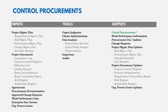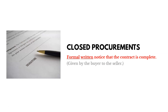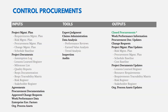The key output of Control Procurements is closed procurements — formal written notice from the buyer to the seller that the contract has been completed. Other outputs can include work performance information, change requests, and updates to procurement documentation already created.